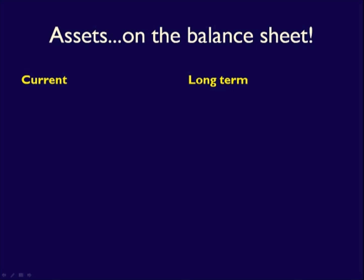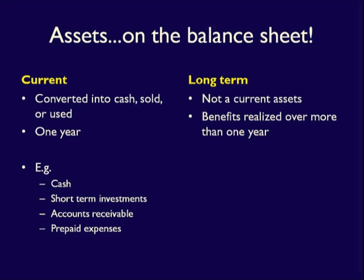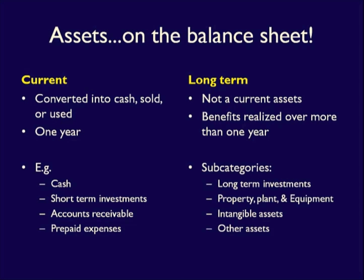Current assets are any assets that will be converted into cash, sold, or consumed within one year. A few of the more common accounts in this grouping are things like cash and prepaid expenses. Long-term assets are any assets that do not meet the definition of a current asset — resources converted into cash, sold, or used over more than one year. They are divided into four subcategories: long-term investments, property plant and equipment, intangible assets, and other assets. Check out the Financial Statement Elements video, which lists, defines, and describes all the different accounts under each category.